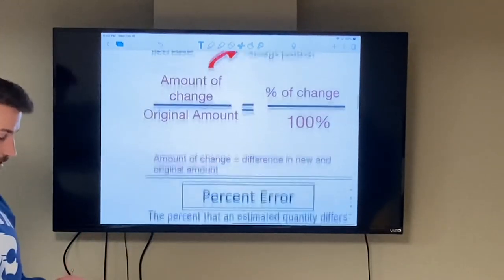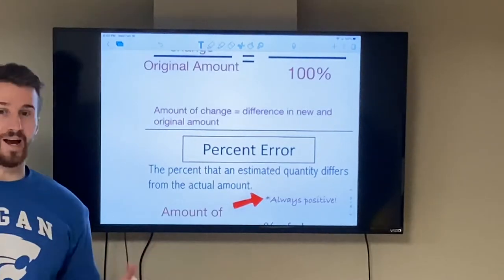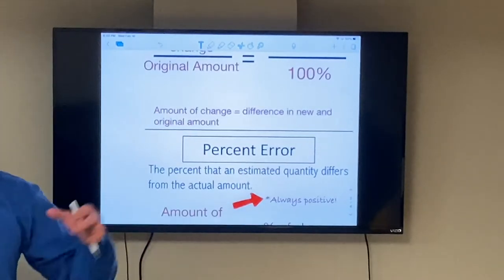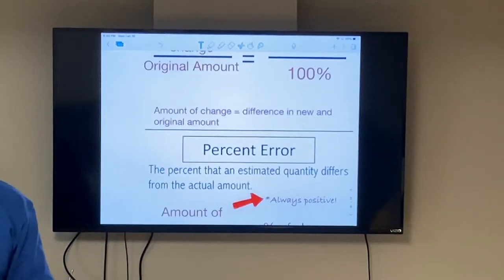Alright, so the amount of change is going to be equal to the difference in the new and the original amount. So we're going to get a new amount and original amount, we subtract those to find the amount of change.